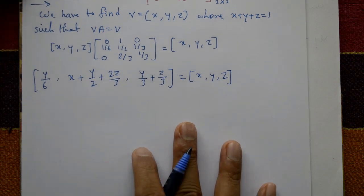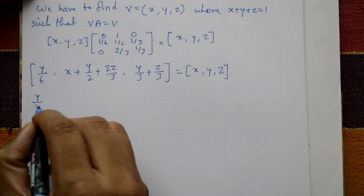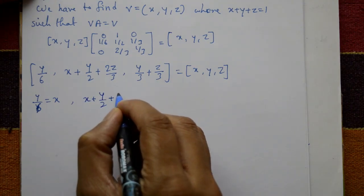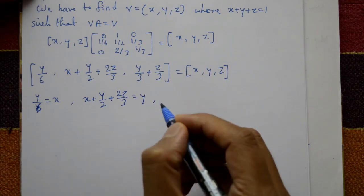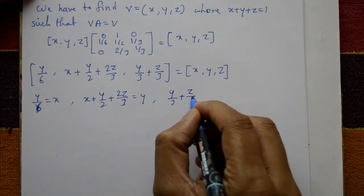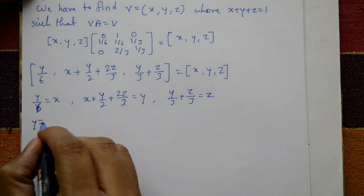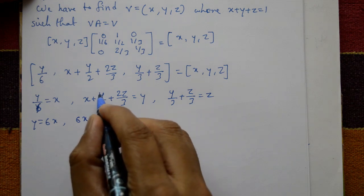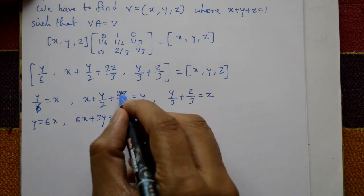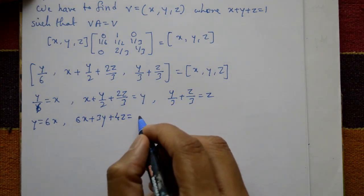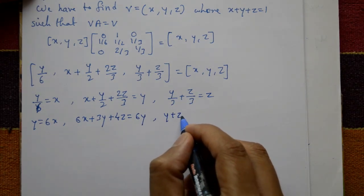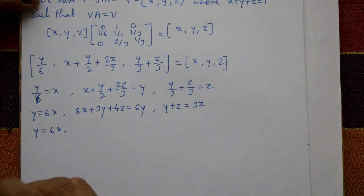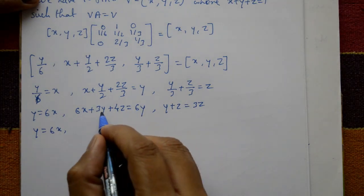Taking the first element: y/6 = x. From the second element: x + y/2 + 2z/3 = y. Multiplying through by 6: 6x + 3y + 4z = 6y, which simplifies to 6x minus 3y plus 4z = 0. From the first equation, y = 6x.